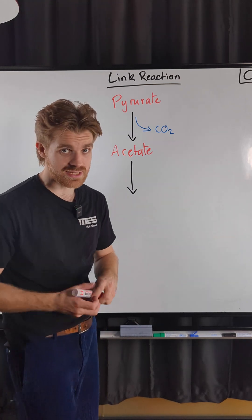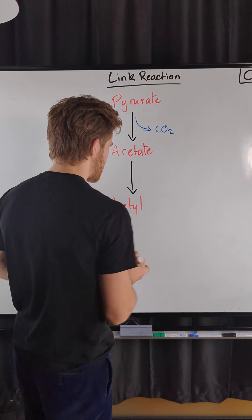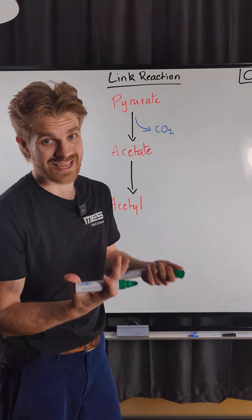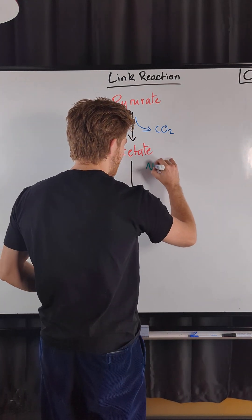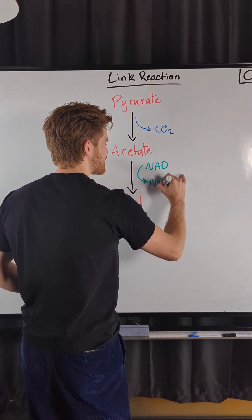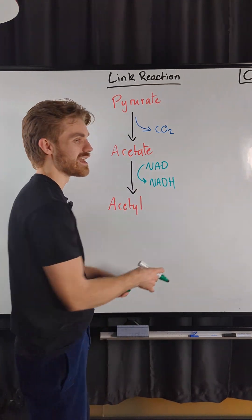And then the acetate is going to be oxidized into our acetyl. Now the acetyl as it is oxidized we need an oxidizing agent that is going to be our NAD and that is going to be converted or it's going to accept the hydrogen and the electron to form NADH.